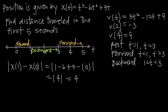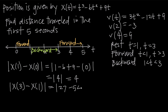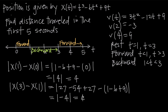For the interval from 1 to 3, we compute the absolute value of x of 3 minus x of 1. Plugging in 3: 3 cubed minus 6 times 3 squared plus 9 times 3 gives 27 minus 54 plus 27 equals 0. We already know x of 1 equals 4. So we get the absolute value of 0 minus 4, which is the absolute value of negative 4, equaling 4. The particle moves another 4 units between t equals 1 and t equals 3.